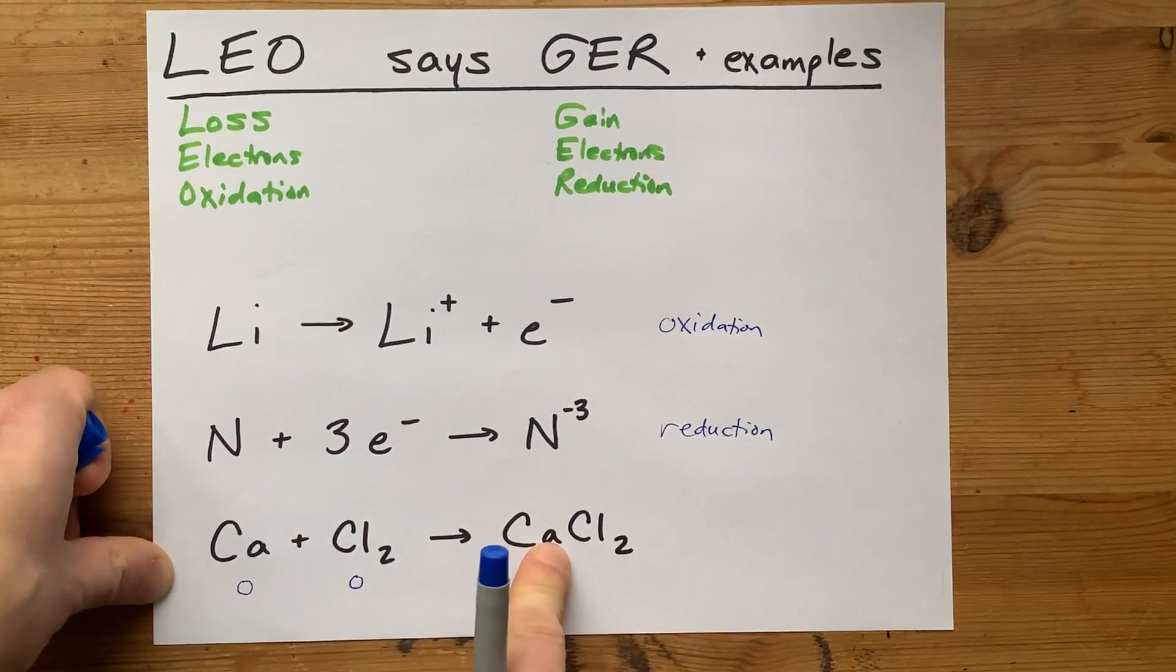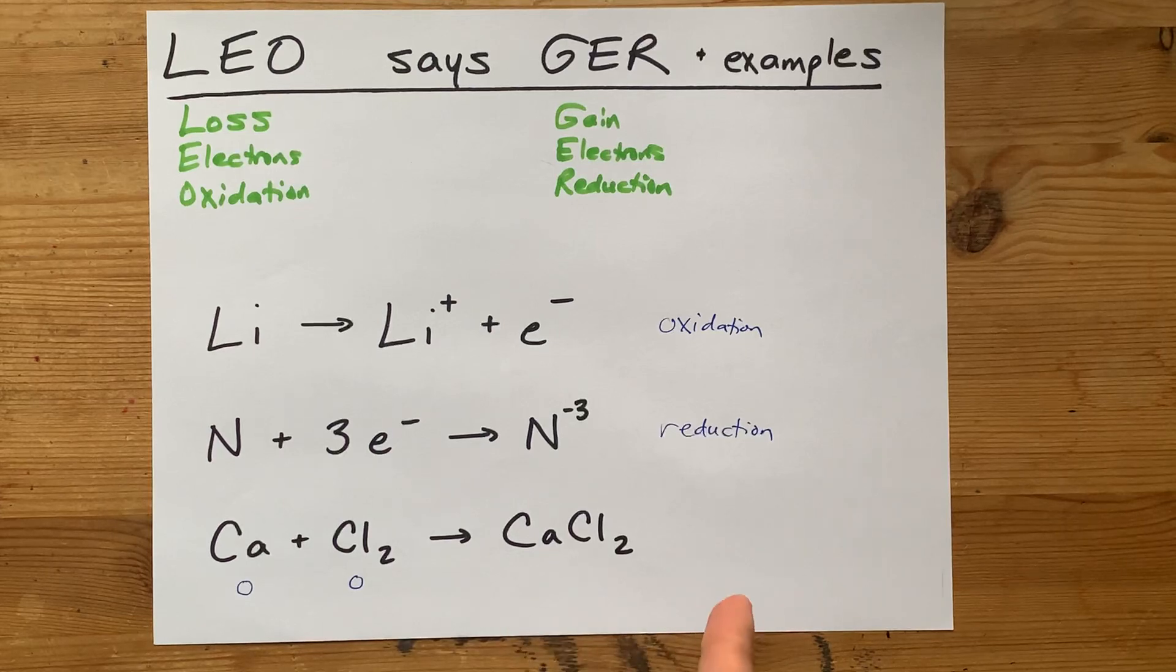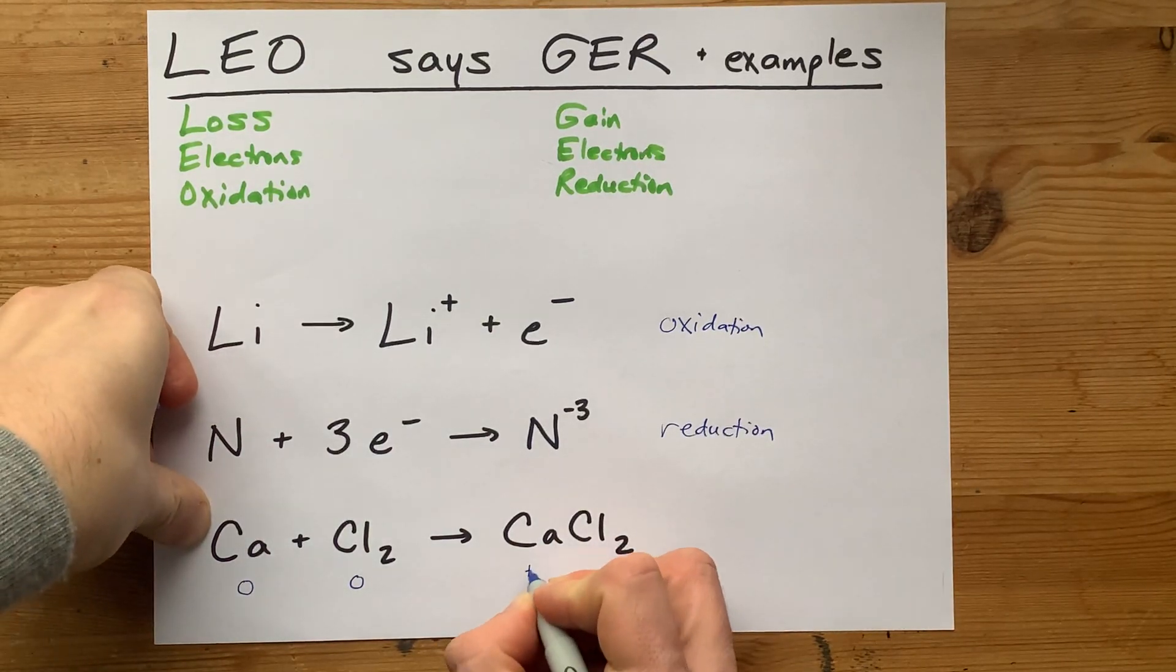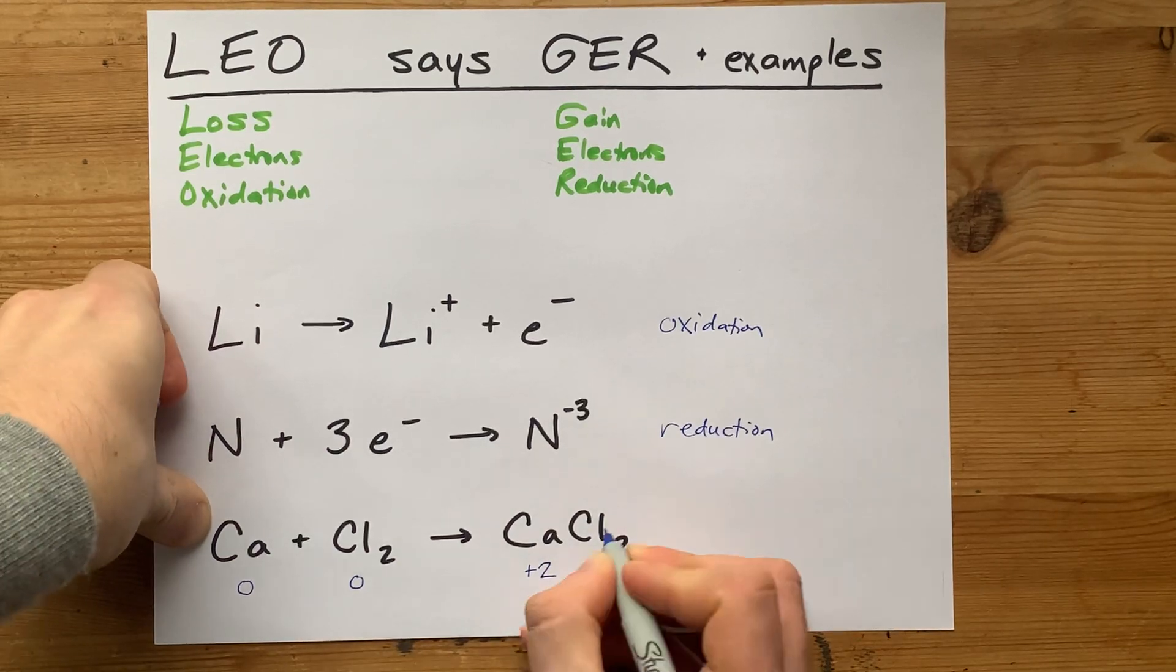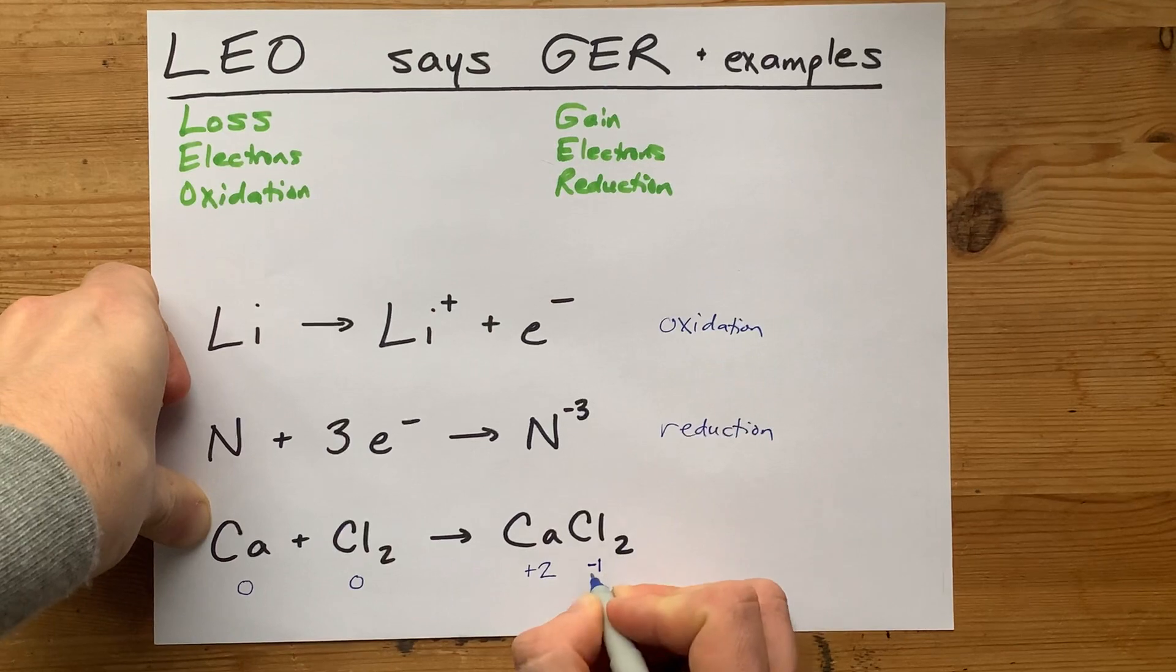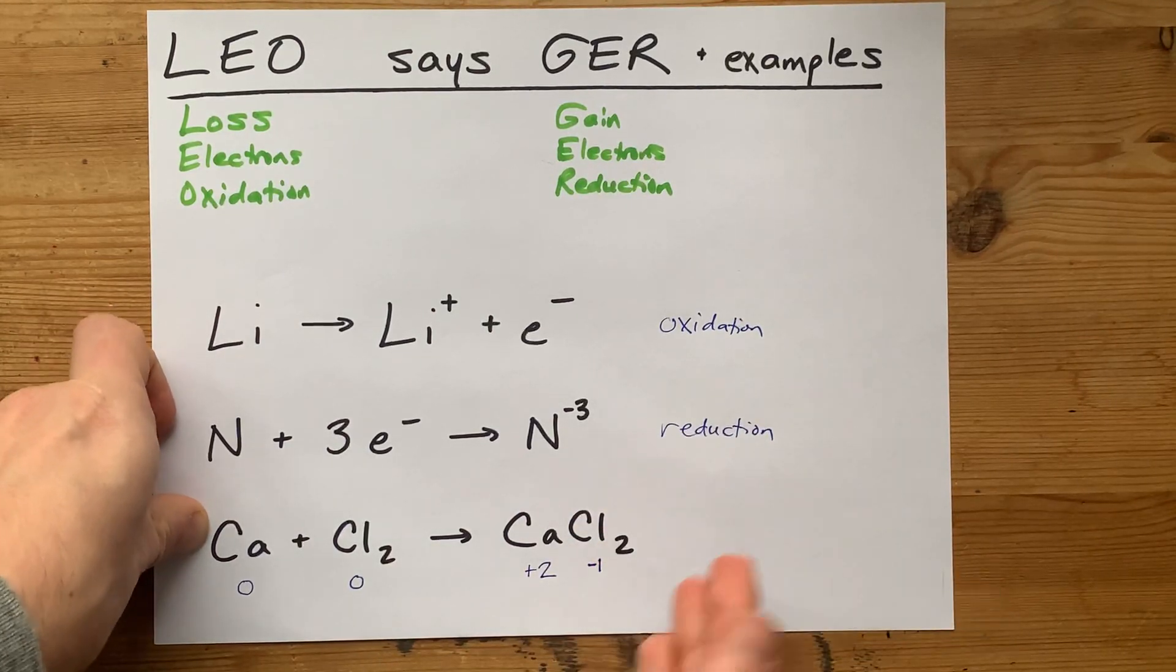What's happening here is we've formed an ionic compound, but what were the charges on each particle? Well, calcium, the metal, likes having a charge of positive two. Chlorine likes having a charge of minus one, and there are two of them. So, in total, those charges add to zero, which is why there's no charge written there.